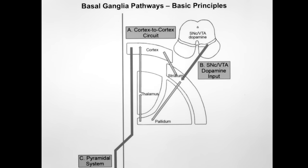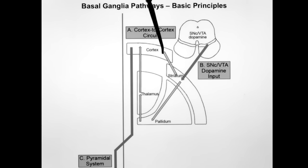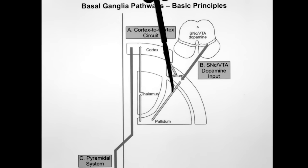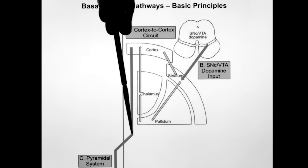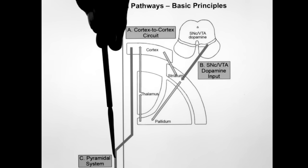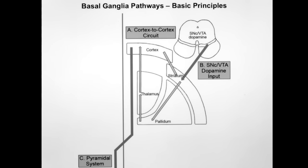We have two circuits. The first is the cortex-to-cortex circuit — a consulting loop where the cortex consults the basal ganglia to improve movement. The pathway goes: cortex to striatum to globus pallidus to thalamus to cortex. Then the corticospinal tract comes down, crosses at the top of the spinal cord, and becomes the corticospinal tract in the spinal cord — the way all movements are executed on a voluntary basis.